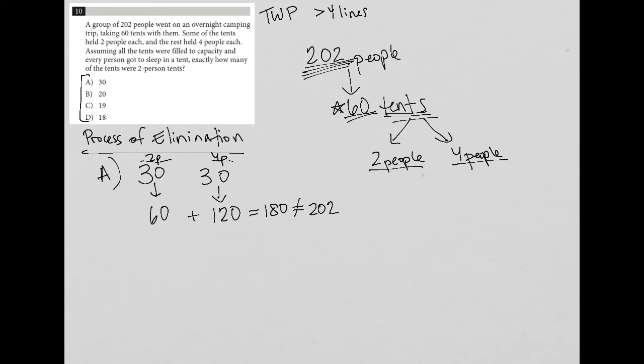So with that, I then go on and say, well, A is not correct. So let's try choice B. If there were 20 two-person tents, that would be 40 people. And that would make 40 four-person tents, which would be 160 people, because 4 times 40. And that gets us a lot closer because we're now at 200. But still not 202, which is what we want. So choice B is gone.